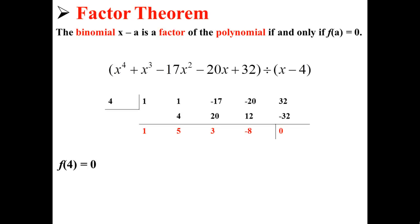The binomial x minus a is a factor of the polynomial if and only if f of a is equal to 0. In this case, x minus 4 is a factor of the polynomial x to the fourth plus x to the third minus 17x squared minus 20x plus 32, according to the factor theorem.